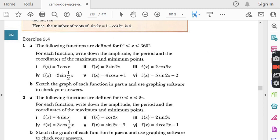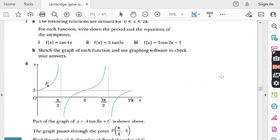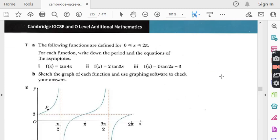Students, in the last lecture we finished question number 7 from exercise 9.4 of chapter number 9 named trigonometry, and the topic of exercise 9.4 is graphs of trigonometric functions. Question number 7 we finished in last lecture, all parts were related to the graph of tangent function and the domain was given in radians.